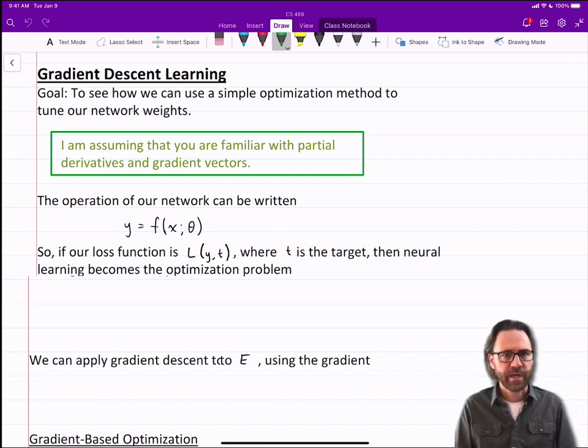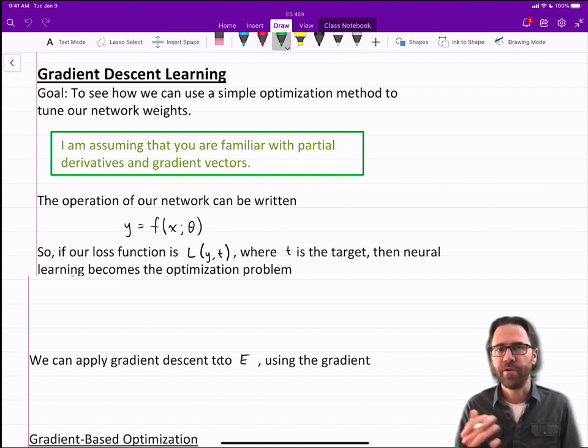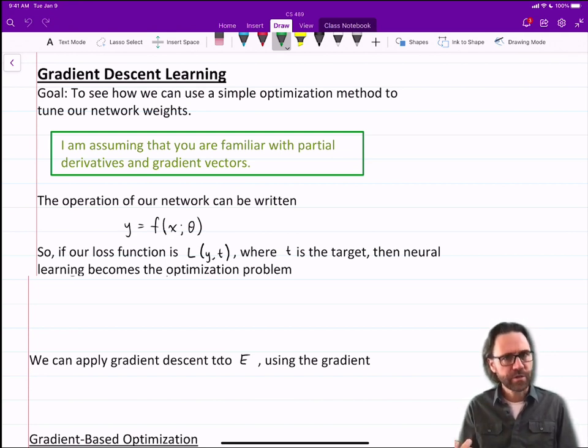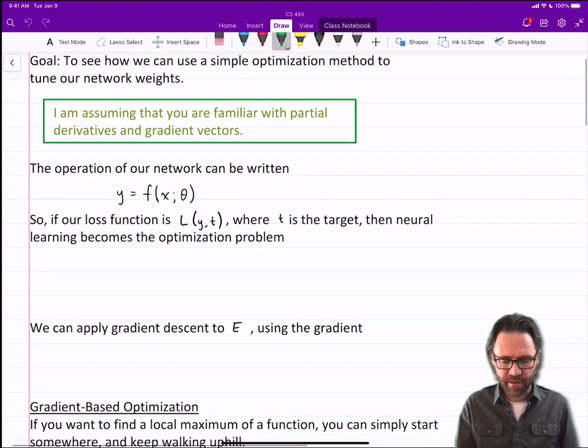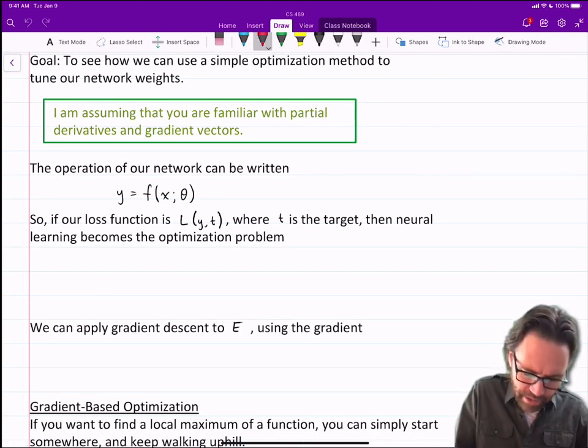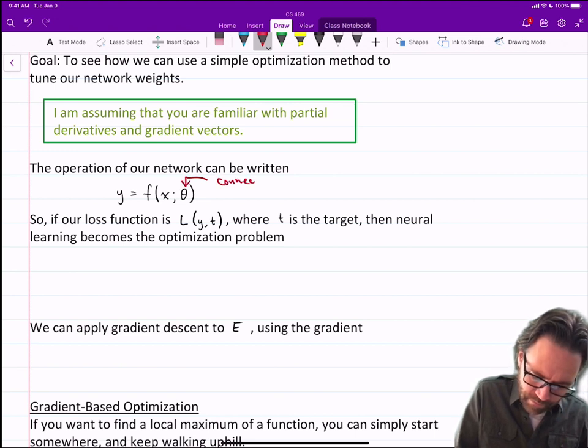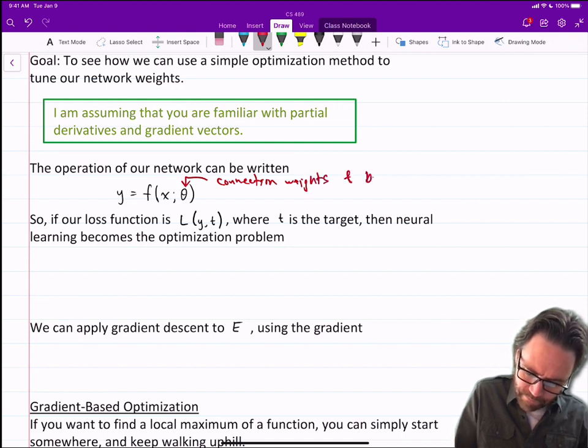So for this lecture and the rest of the course, I'm going to assume that you are familiar with partial derivatives and gradient vectors. If you're not sure what those are, Google it and look at a quick tutorial on partial derivatives and gradient vectors because they are critical to this. Recall that the operation of our network can be written as a function y equals f of x given theta. Now that theta are our connection weights and biases.